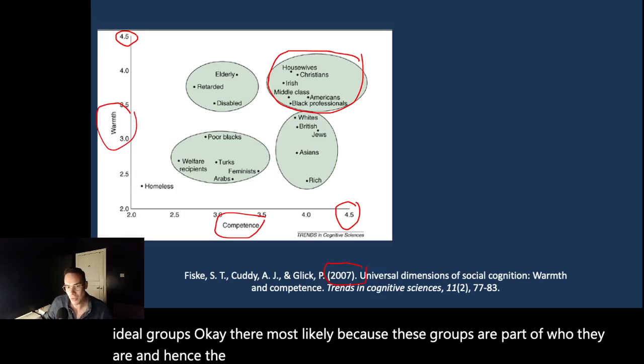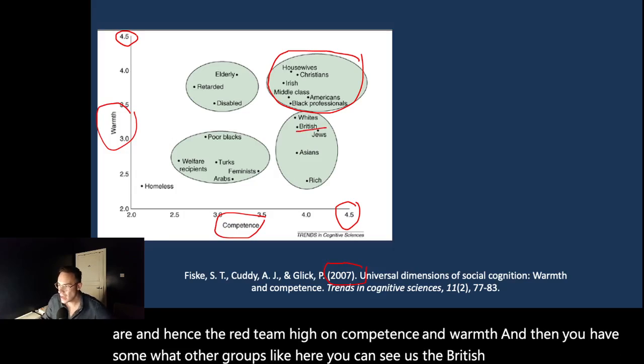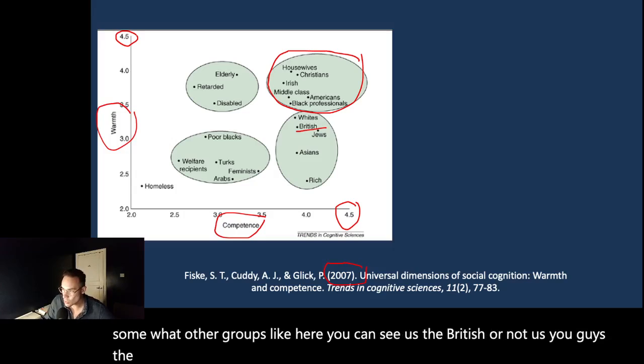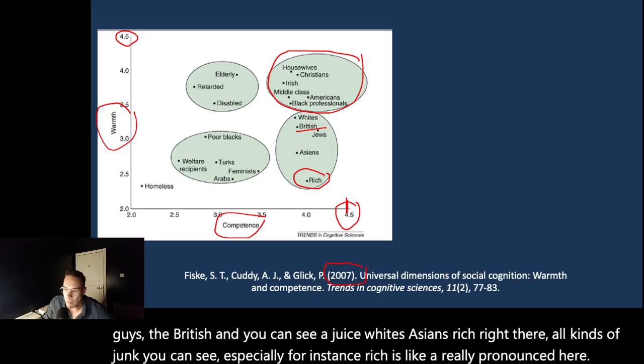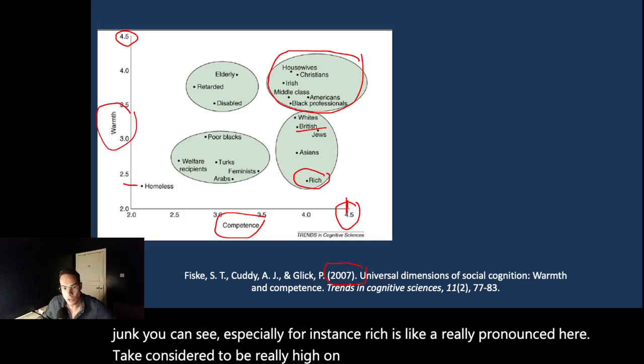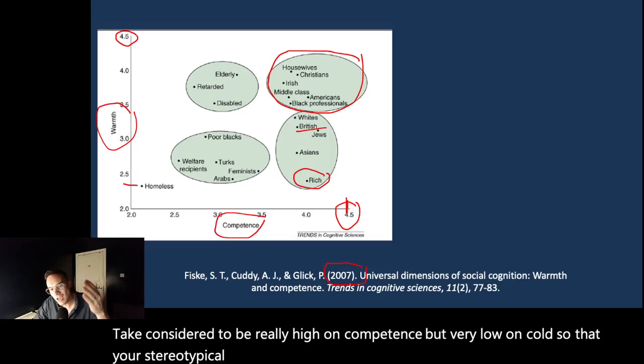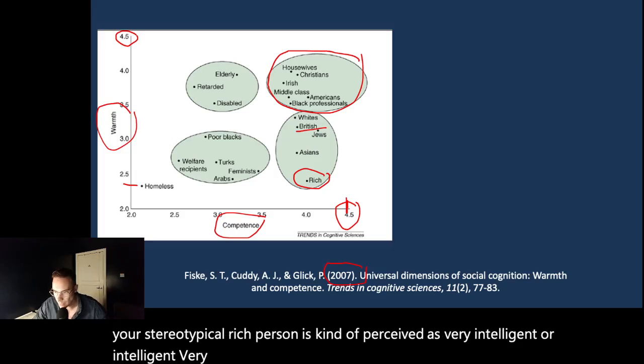And then you have somewhat other groups. Like here you can see the British, and you can see Jews, whites, Asians, rich. They're all judged, especially for instance rich is really pronounced here. They're considered to be really high on competence, but very low on warmth. So the stereotypical rich person is perceived as very intelligent or competent, but very cold. That's another group where people think, I can group them into these, this is my stereotype about them, and that helps me shape the content within that stereotype.